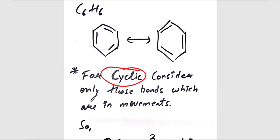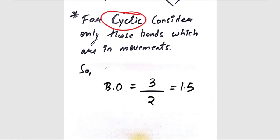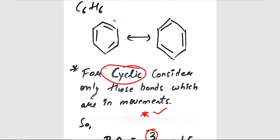For cyclic, we consider only those bonds which are in movement. So here, we can clearly see only 3 bonds are in movement. So we'll have 3 instead of 6 here. This is an exception, remember it.